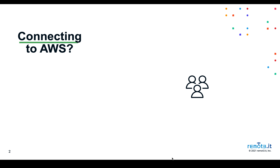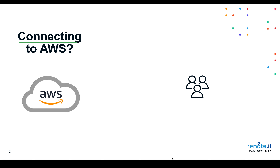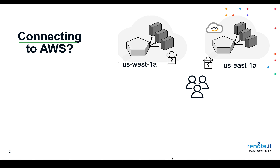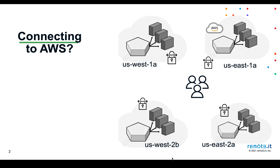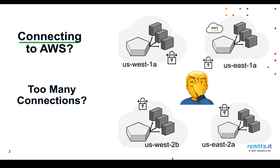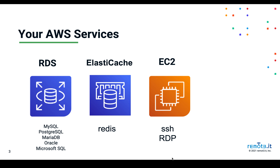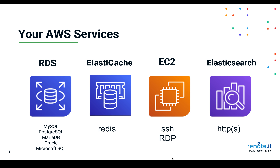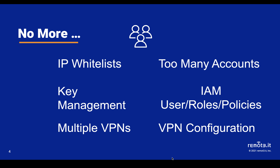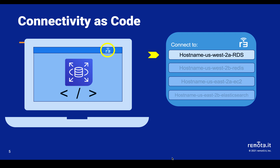Do you need to connect to resources inside AWS, but you're frustrated self-hosting multiple VPNs or bastions and always switching back and forth between accounts? What if there was a simple way to access your databases, Redis Cache, EC2s, and many other services across any number of AWS accounts all at the same time, without the typical hassles of managing access yourself? It's called Connectivity as Code.